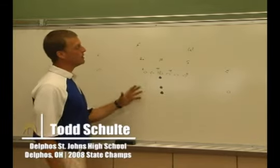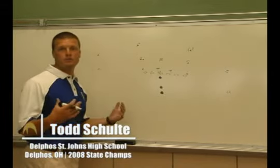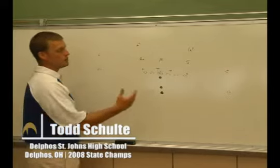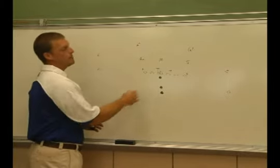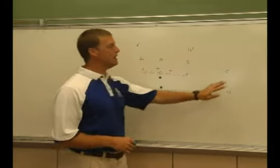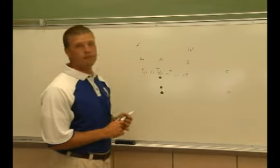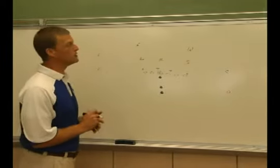What I'm going to be diagramming here is our 41 and 42 option, which is a triple option versus a 4-3. First we'll diagram it against the 4-3 running to our tight end, and then we'll diagram it running away from the tight end, running it weak to our formation.